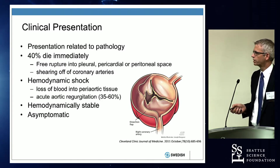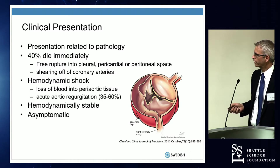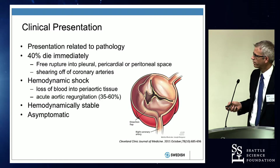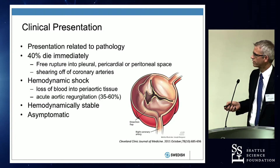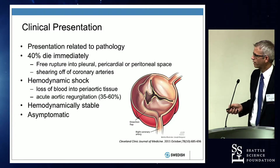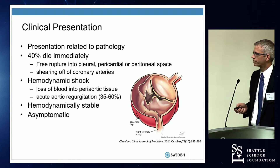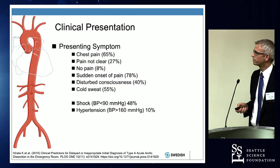A large number of patients have acute aortic insufficiency. Here in this picture you can see the dissection, the false lumen, and the flap. This creates aortic insufficiency because the aortic valve is no longer supported. And the right coronary artery, for example, can be involved in the dissection and the artery can be blocked off — so that can be the presentation.